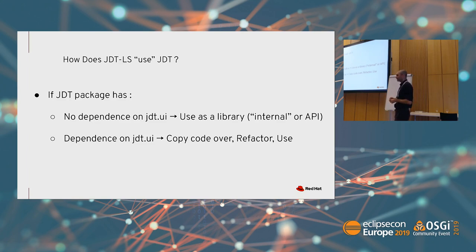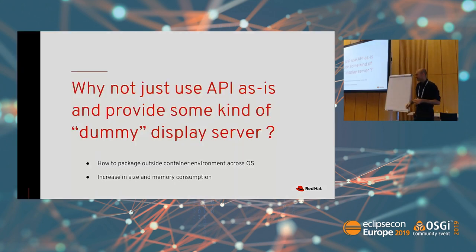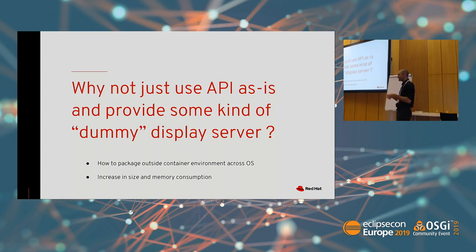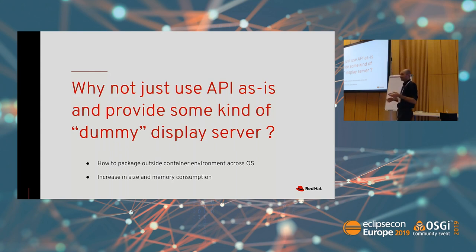We're definitely trying to get them to file more bugs and be more open about exactly what they need so it can actually be addressed. But some people looking at this might be wondering: why even bother trying to strip it out? Just bundle all of JDT UI with platform UI, get some kind of X11 dummy display server inside some container, and query for the API and only use what you need. This would be nice in the sense of not having to refactor everything, and certainly easier in terms of working on other features and bug fixes, but there are some issues with it.